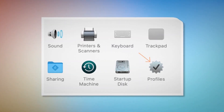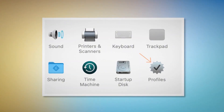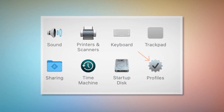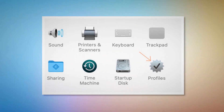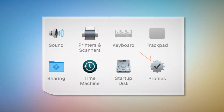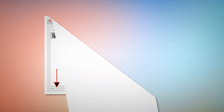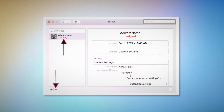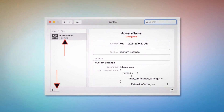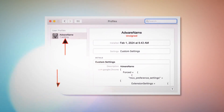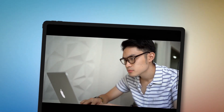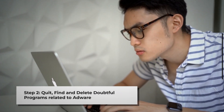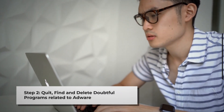But if you can find the Profiles icon, as shown in the screenshot, then click on that. Once you click on the Profiles icon, you will be landed on a window like this. As shown in the screenshot, select the Unknown or Doubtful Profile and then click on the minus button to remove the profile. If you can't find any Profiles icon as mentioned in Step 1, just follow Step 2 directly.